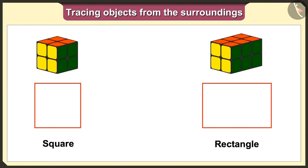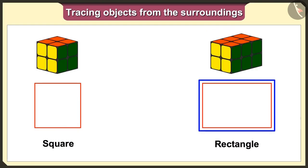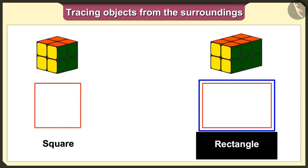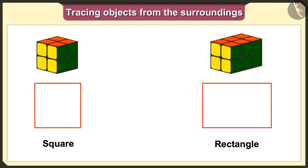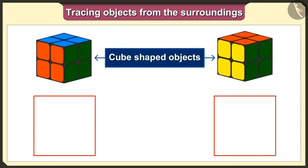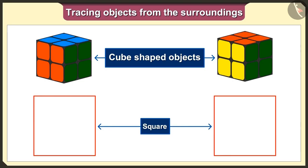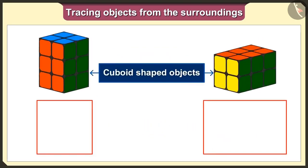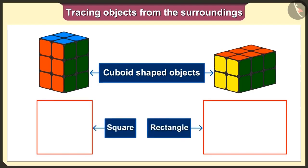Now I understand it very well: the shape we get when we trace the cuboid is not a big square, but it is a rectangle. Remember: if we keep the cube-shaped toy in any way and trace it, we will always get a square shape. And if we trace the cuboid shape, we will always get either a square or a rectangle shape.